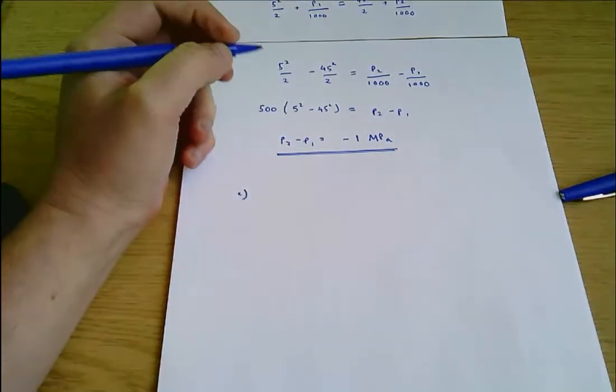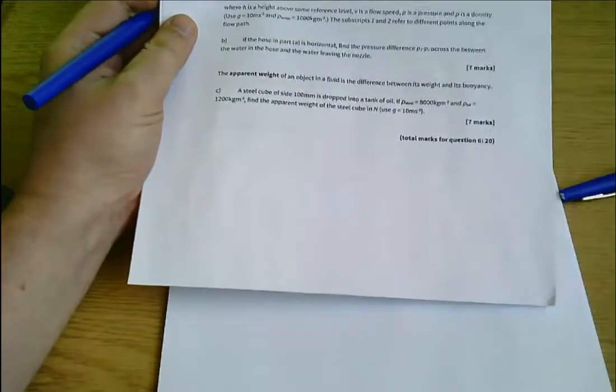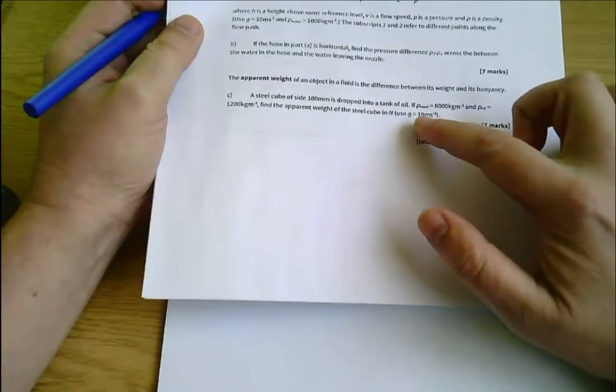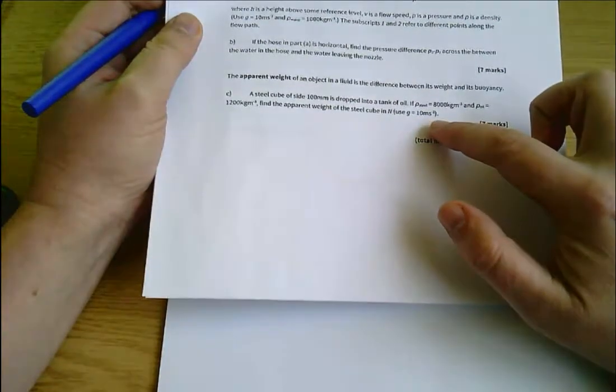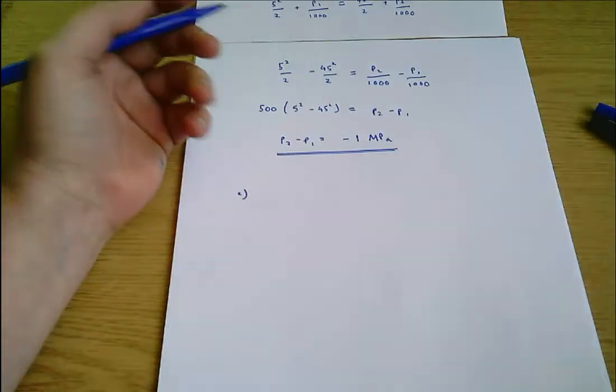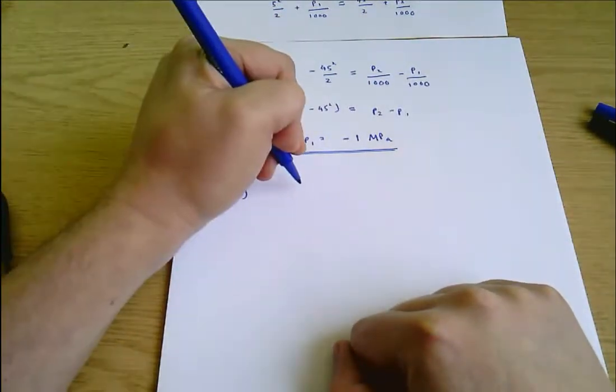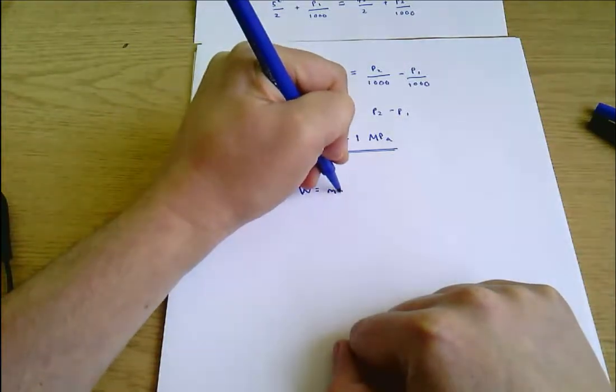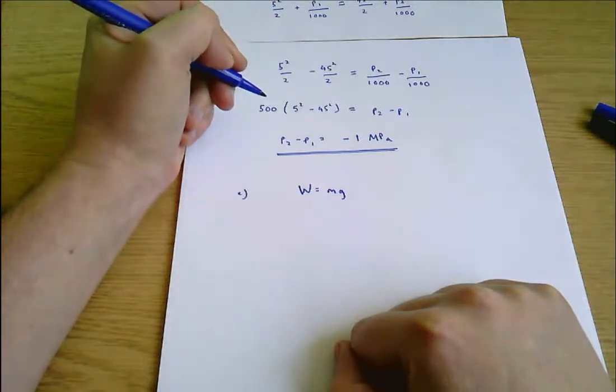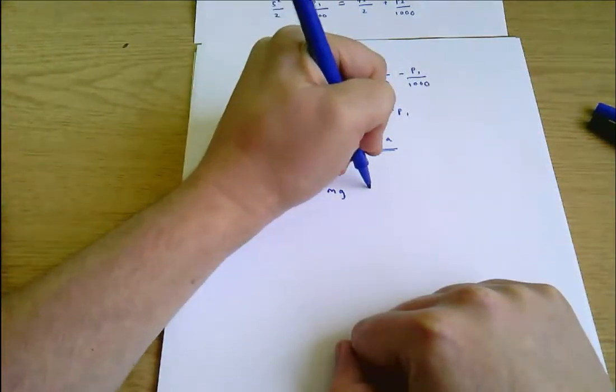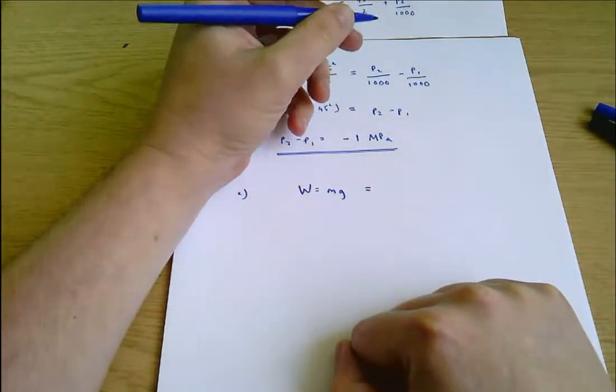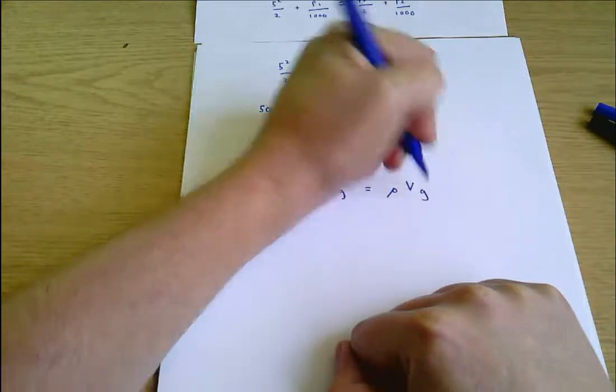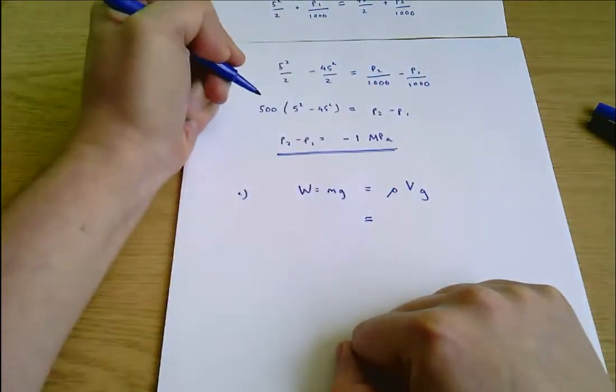Part C says the apparent weight of an object is the difference between its weight and its buoyancy. We've got some information about a steel cube and we are asked to find the apparent weight. So we need to find the weight of the steel cube and we need to find the buoyancy. Weight equals mass times gravity. If we want to find a weight, that's a good place to start. And we know that mass is ρV, density times volume. So weight equals ρVG.